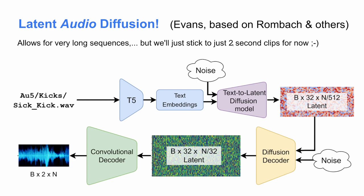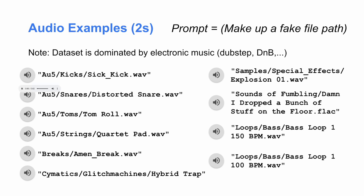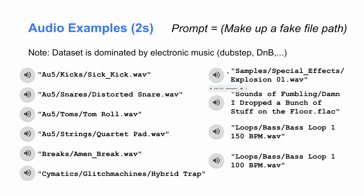This talk is structured around short two-second clips, so I've got some examples. There's just a kick and a snare. The idea is you make up a path name — I made these up, they may not be in our dataset. Our dataset is dominated by electronic music, so if something doesn't sound like real strings, that's why. The Amen break appears everywhere. There are some nice pads. It can do a bit of Foley-type stuff — though that's really more a limitation of the dataset. Here's an electronic music explosion, and sounds of dropping stuff — I guarantee that's not in the dataset. It seems like the model knows a little bit about BPMs, though I wouldn't trust it — here's something fast, and here's something slow.